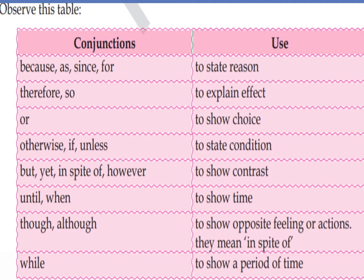Now observe this table, which is also in your book. 'Because,' 'as,' 'since,' 'for' are used to state a reason — whenever we are stating some reason, we use these conjunctions to join two clauses or sentences. 'Therefore' and 'so' are used to explain effect. For example, 'She is not well, therefore she did not come to school.'